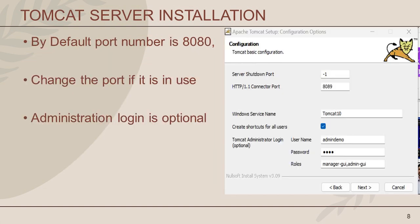The next screen is the configuration screen. This is a very important screen to install the Tomcat server. Here, you need to set up basic configuration for Tomcat. In connector port, 8080 is the basic port number. If you are already using this port number, you can change it here. Set port number 8089 to avoid any conflict.